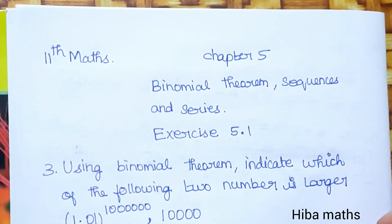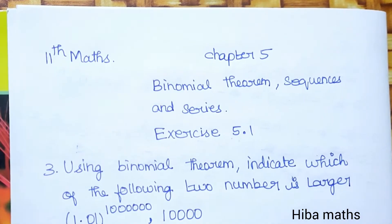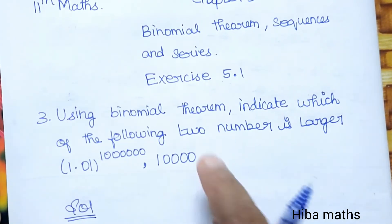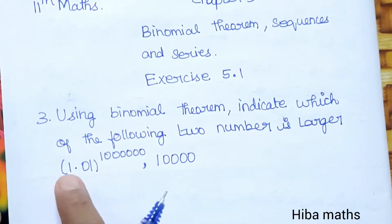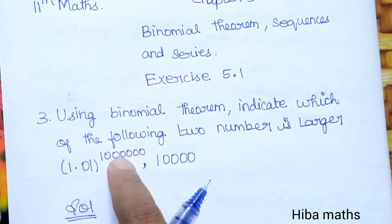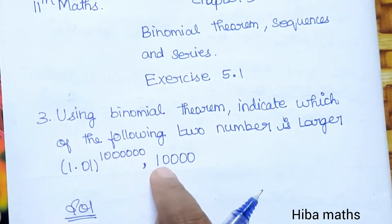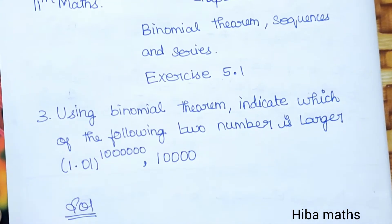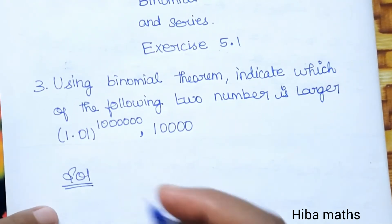Hello students, welcome to Heba Max 11 standard Math, Chapter 5: Binomial Theorem, Sequences and Series, Exercise 5.1. In order to solve the problem using the binomial theorem, indicate which of the following two numbers is larger: 1.01 power 1000000 or 10,000. So how do we solve this problem using the binomial theorem?